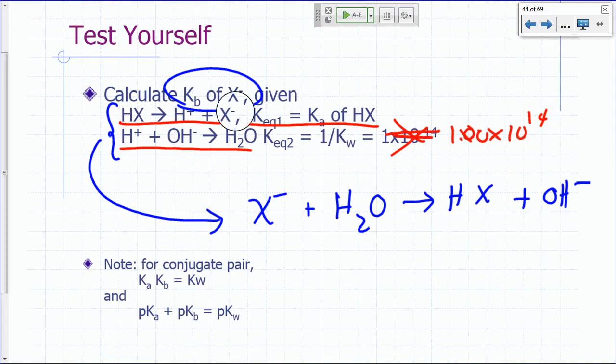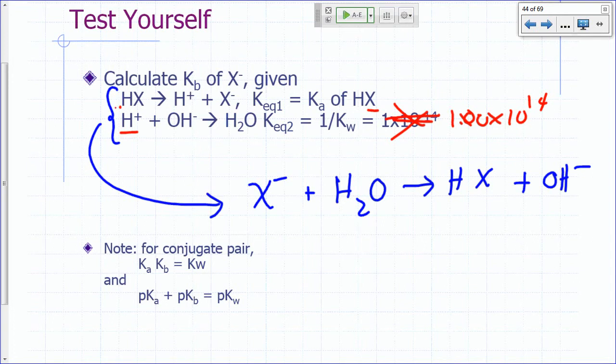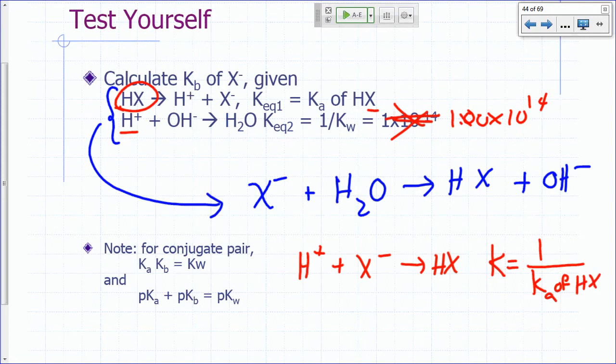So how can we combine these two reactions to give you this reaction? Think about something similar to Hess's law, right? What would that be? You want HX on the other side, right? So you reverse the first one. So you write the first one in reverse. So you have H plus plus X minus gives you HX. What's the KEQ for this? It's going to be 1 over KA of HX, right? You're flipping that one.